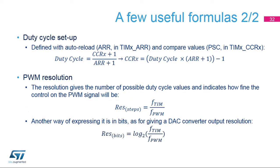The duty cycle is defined using the ARR value and the compare value in the TIMX_CCRx register. The duty cycle equals (compare value+1) over (ARR+1) and does not depend on the PWM frequency. The PWM resolution — the number of possible duty cycle steps — equals FTIM over the PWM frequency, minus 1. Expressed in bits, the resolution is the base-2 logarithm of FTIM over the PWM frequency, minus 1.